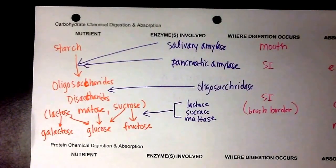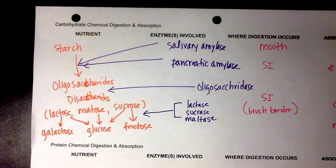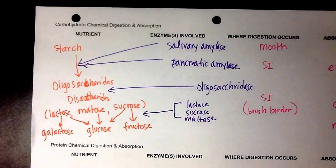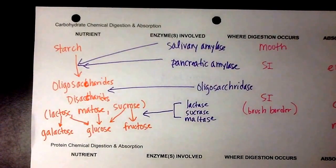And the following two columns, I wanted you to put where digestion occurred. So with salivary amylase, it occurred in the mouth. With pancreatic amylase, it occurred in the small intestine. And with the lactase, sucrase, and maltase, it occurred in the small intestine as well.